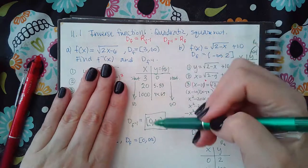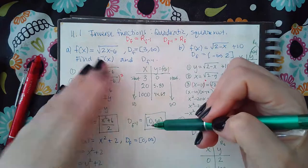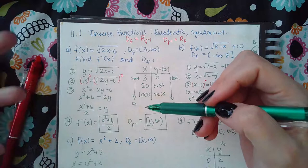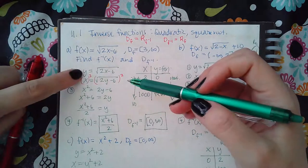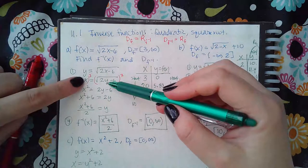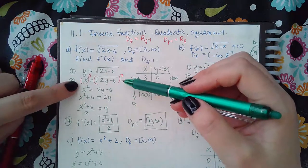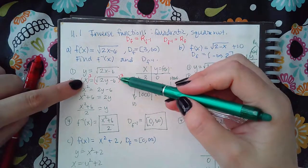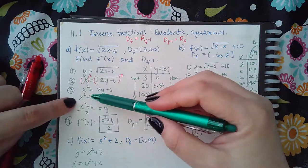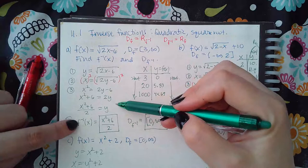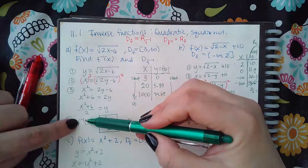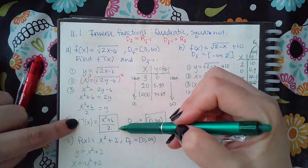So then after I figured out the domain of f inverse, then I went to go figure out what did the f inverse actually look like. So I changed this to the y, I interchanged the x and the y's, and then I started to solve for y. So I squared both sides to get rid of the square root. Then I added the 6 over, and then I divided by the 2. Once y was all by itself, I could turn that into the f inverse, and then I had the expression for the f inverse.